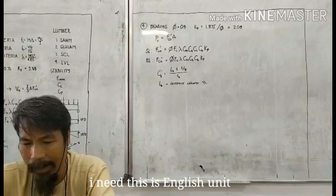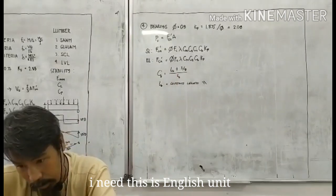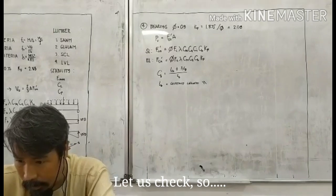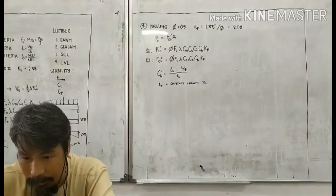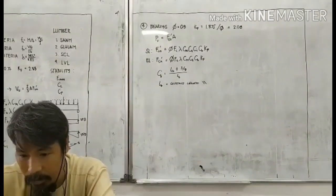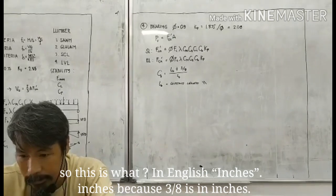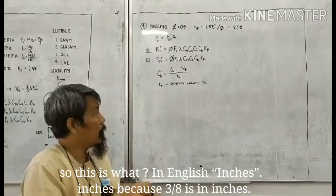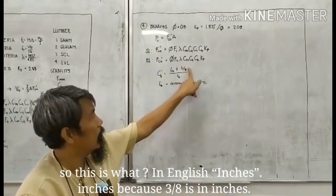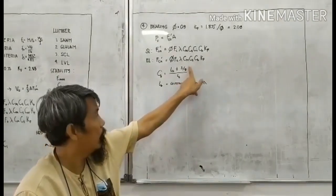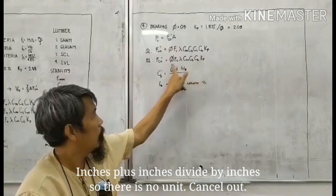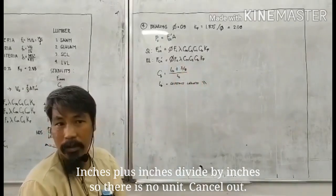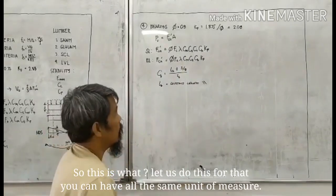So I think this is English unit. Let us check. So which is the real net by 3/8? So this is what? In English, inches. In inches. Because 3/8 is in inches. Inches plus inches divided by inches, so there's no unit. Cancel now. This is what?